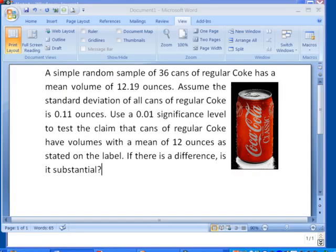It says a simple random sample of 36 cans of regular Coke has a mean volume of 12.19 ounces. In other words, we took a simple random sample of 36 cans, and then we took the mean of the amount of Coke in those cans, and that mean ended up being 12.19 ounces.